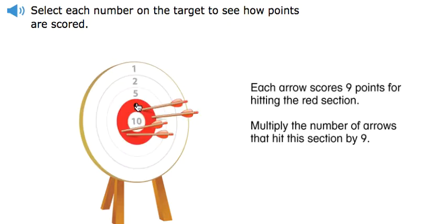Each arrow scores nine points for hitting the red section. Multiply the number of arrows that hit this section by nine.